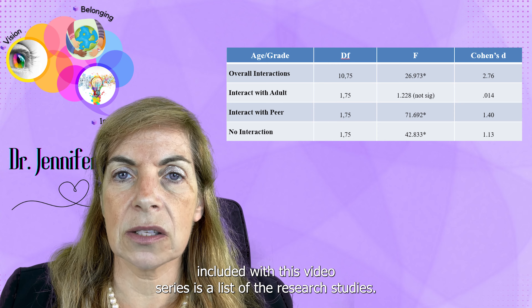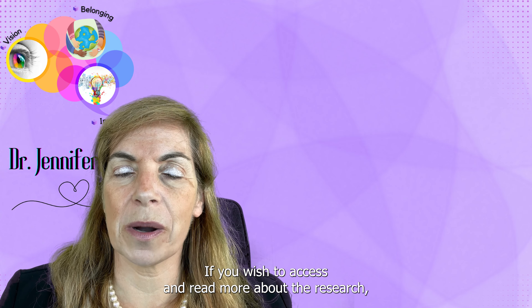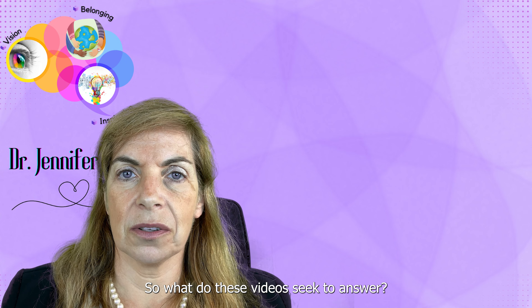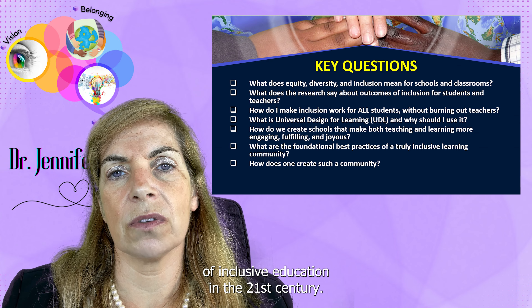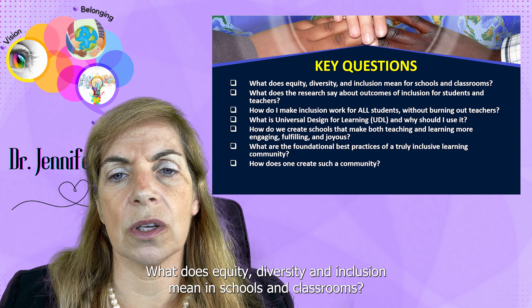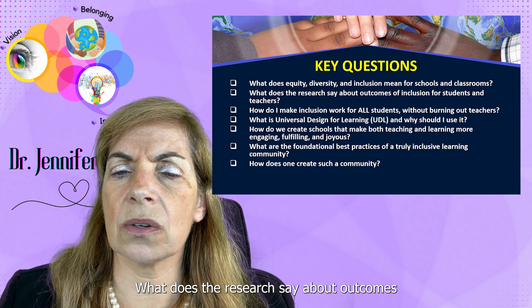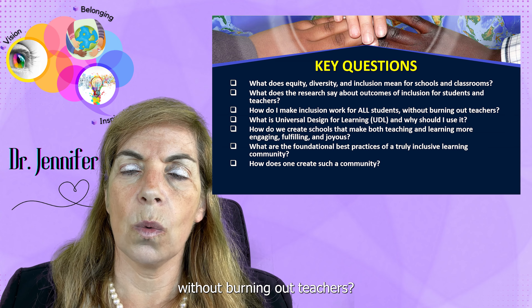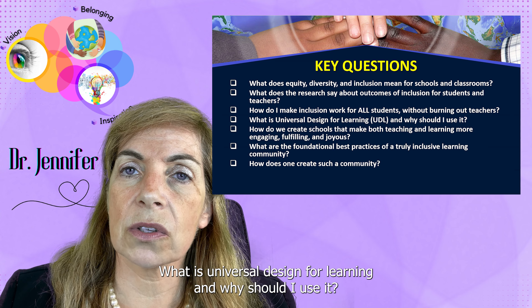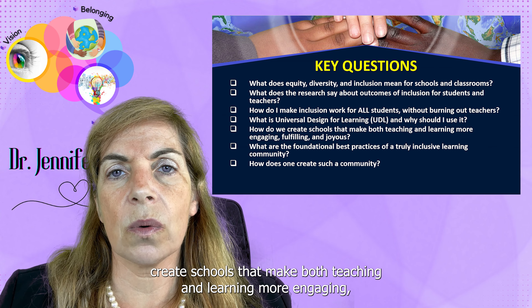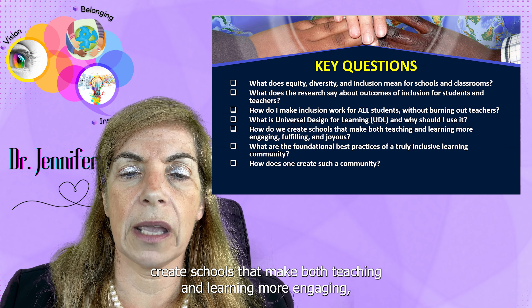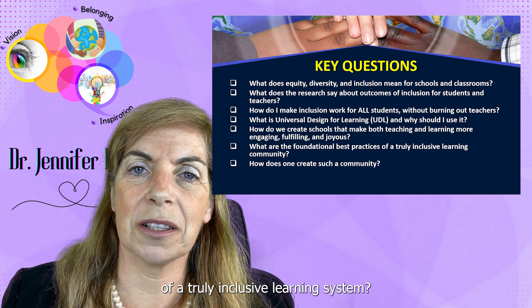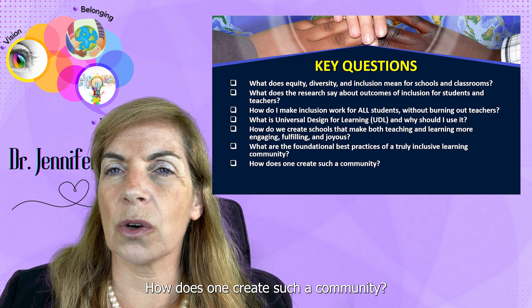Included with this video series is a list of the research studies — if you wish to access and read more about the research, you will find it in the package that comes with the video. So what do these videos seek to answer? They seek to answer the key questions of inclusive education in the 21st century: What does equity, diversity, and inclusion mean in schools and classrooms? What does the research say about outcomes of inclusion for students and teachers? How do I make inclusion work for all students without burning out teachers? What is universal design for learning and why should I use it? How do we create schools that make both teaching and learning more engaging, fulfilling, and joyous? What are the foundational best practices of a truly inclusive learning system, and how does one create such a community?